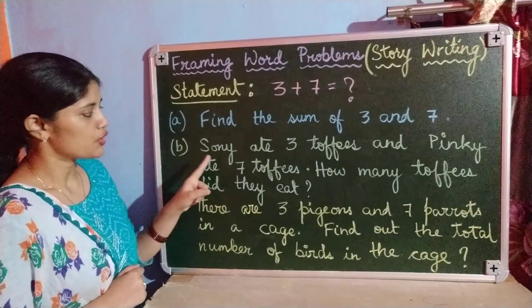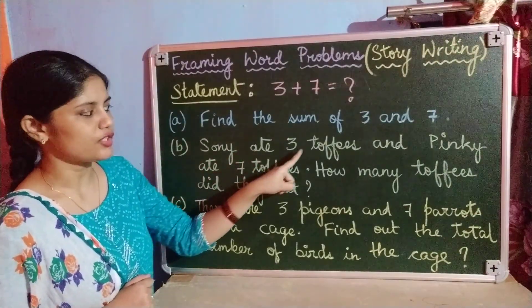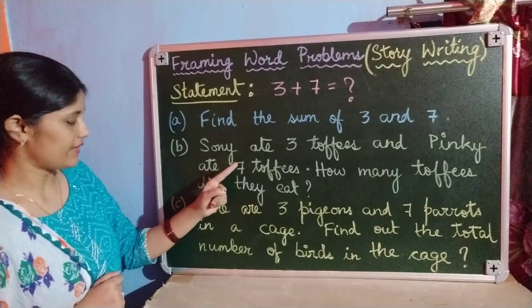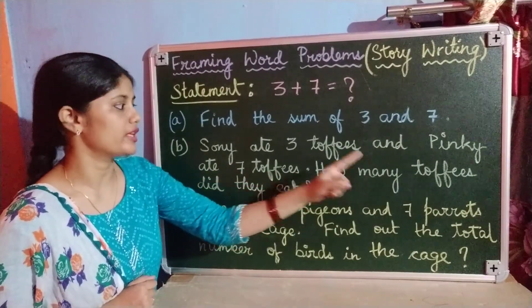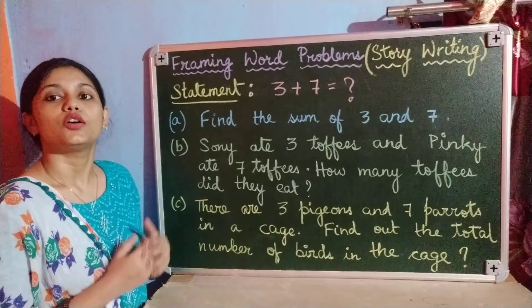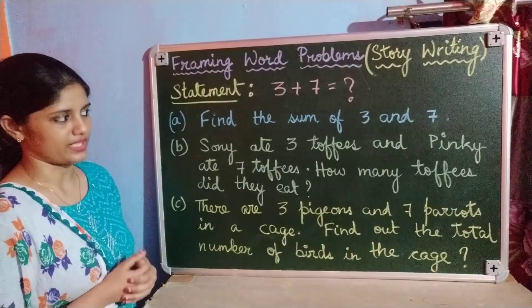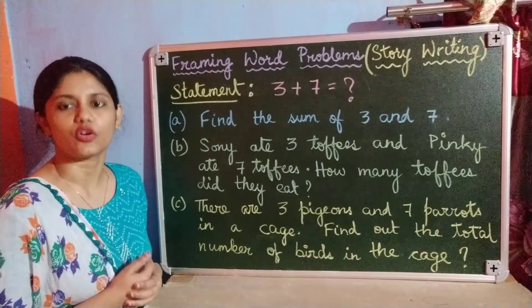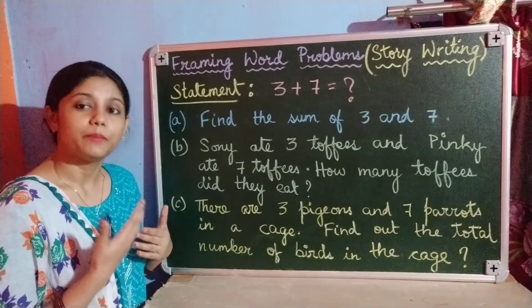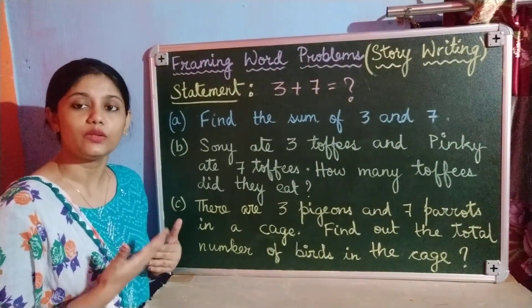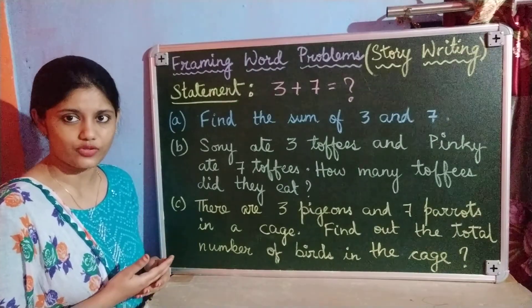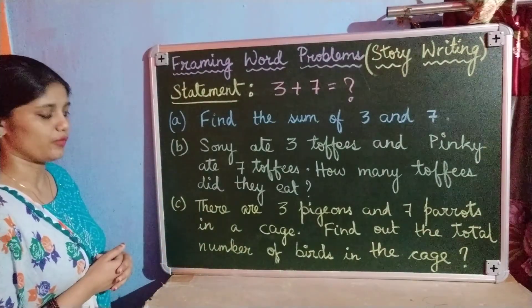The second word problem: Soni ate 3 toffees and Pinky ate 7 toffees. How many toffees did they eat in total? So Soni ate 3 toffees, Pinky ate 7 toffees, and together we find how many toffees they ate in all. This was the second word problem.